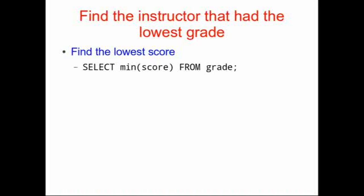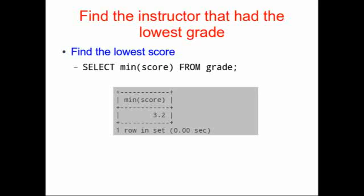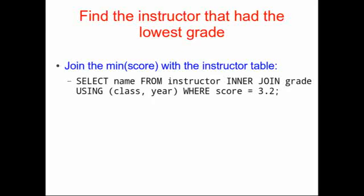Our first example is to find the instructor that had the lowest grade — the toughest instructor — out of them all. One way to do this is to start by finding the lowest score. We could have a select statement that chooses the lowest score from all of the grades. The lowest score is 3.2. We can now write another select statement that builds on that, using an inner join because we know the score is 3.2 and there must be an instructor involved with that score.